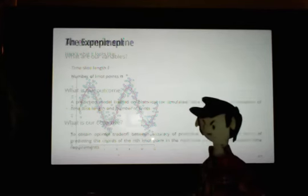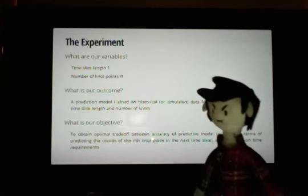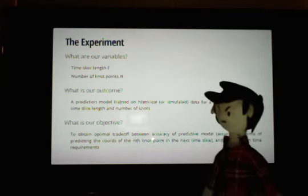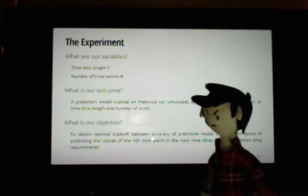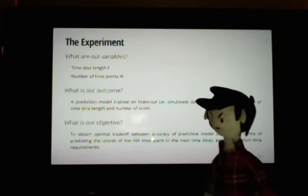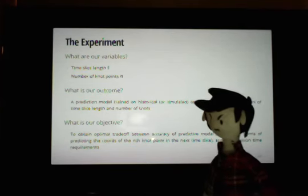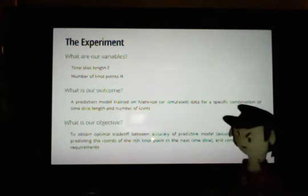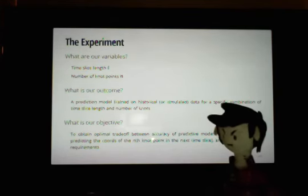So what's our potential experiment here? Basically, you have sort of two variables you could look at when you're looking at time series data in finance. You've got a time slice of a certain length that you could use, and then you've got how many knot points you want to try to fit into that time slice. So the outcome is going to be basically a predictive model that uses those variables to try to predict where the sort of nth knot point in the next time slice that maybe hasn't happened yet is likely to be.